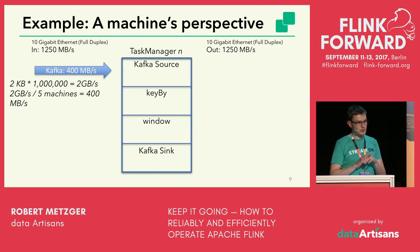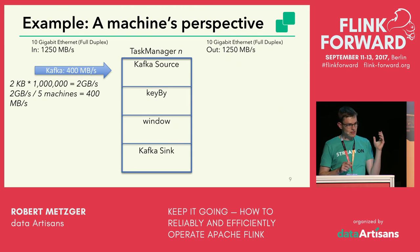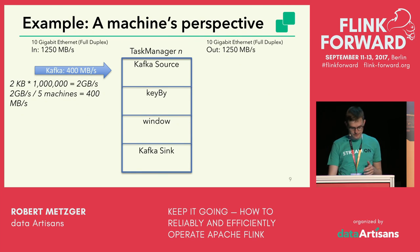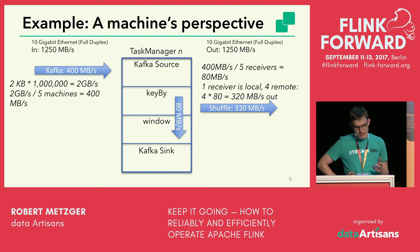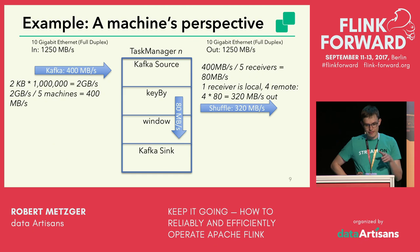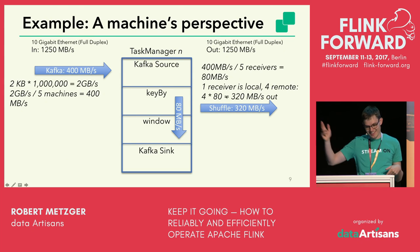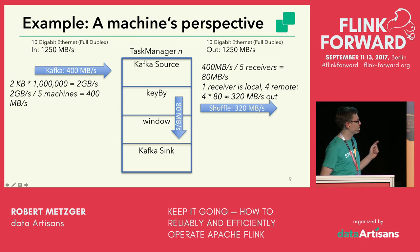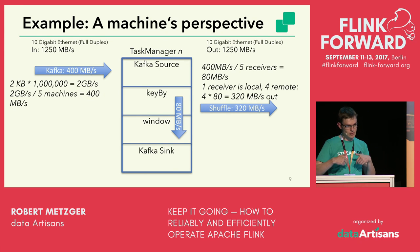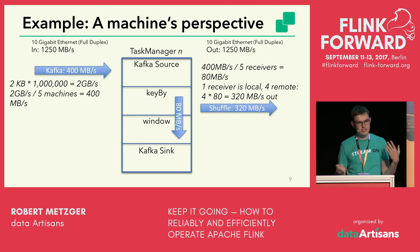For the keyBy step, we shuffle data over the network so all events from one user end up on the same machine. Of the 400 MB/s stream, divided by five receivers, each receiver gets 80 MB/s. One receiver is local (ourselves), so we send 320 MB/s out to the four other machines. The four other machines also each send us 80 MB/s, so we receive 320 MB/s from them.